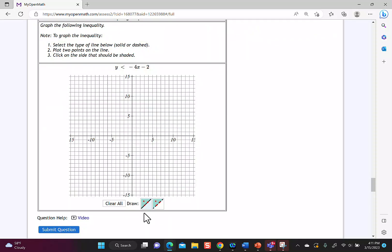If instead your inequality is strictly less than, we would pick a dashed line. Then I would go to the intercept, this time it's a negative 2, and use the slope. This one says negative 4.